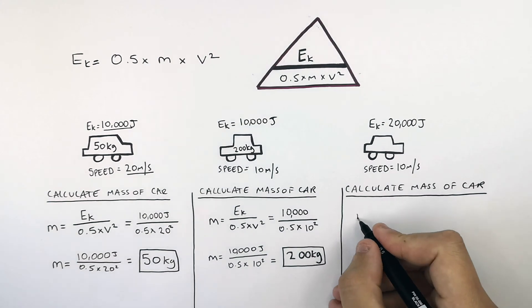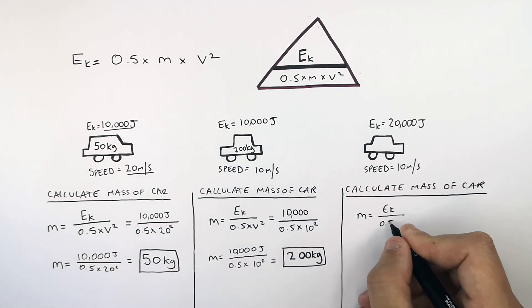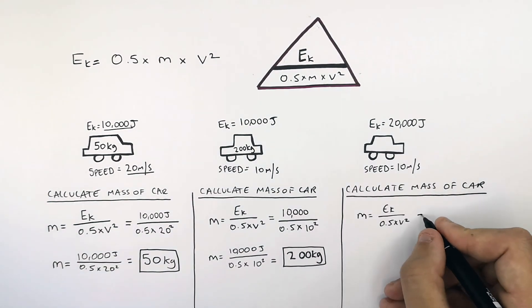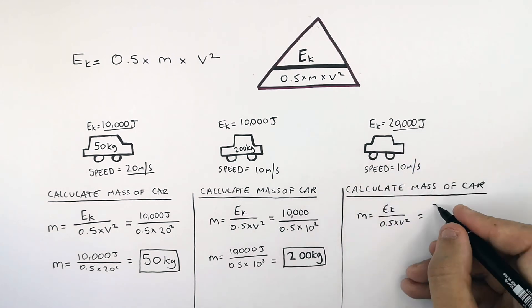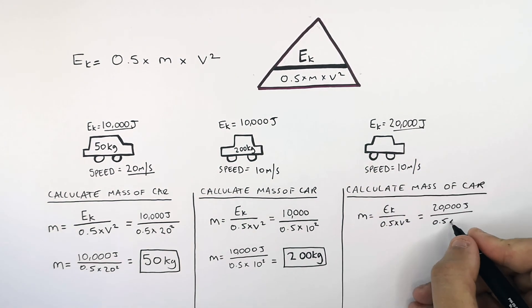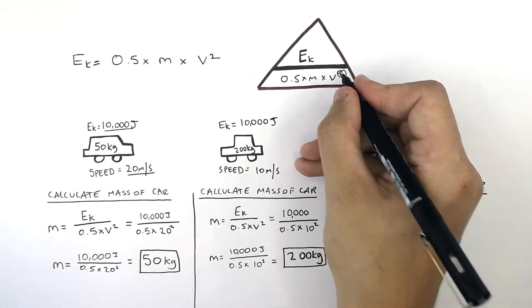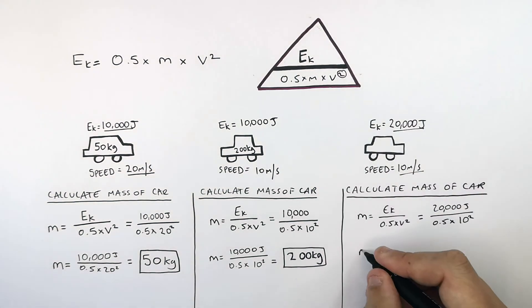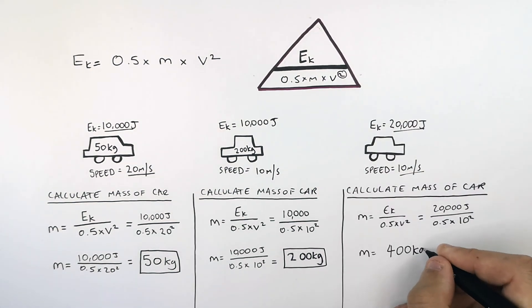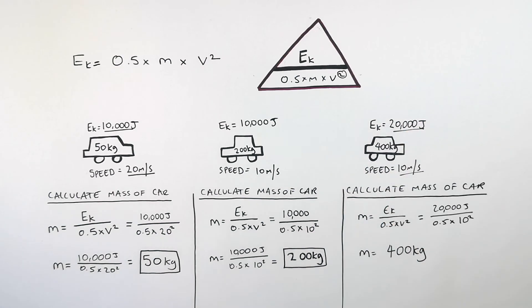Mass equals kinetic energy stored divided by 0.5 times V squared. Substituting the numbers: 20,000 joules divided by 0.5 times 10 squared gives you a mass of 400 kilograms. So the car has a mass of 400 kilograms.